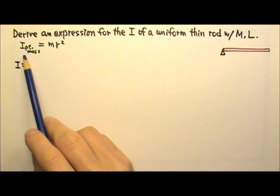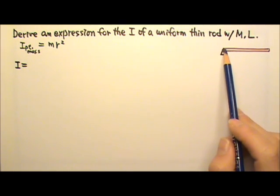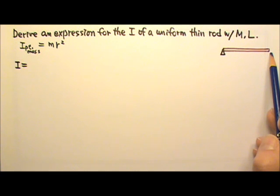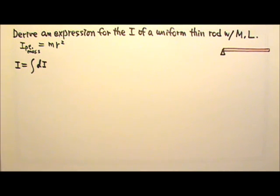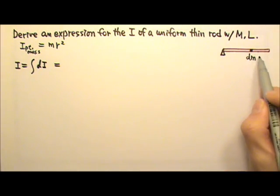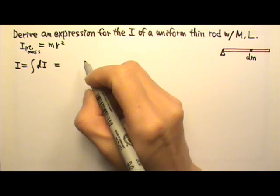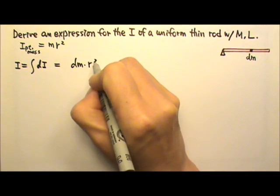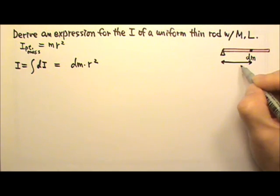We already know that the rotational inertia of a point mass is m r squared. However, this rod is not a point mass, so we have to chop it into little pieces of dm, find the rotational inertia dI for each piece of dm, and then add them all together. For example, this little piece of dm is a point mass. Therefore, we know its little bit of the rotational inertia dI is mass dm times r squared.